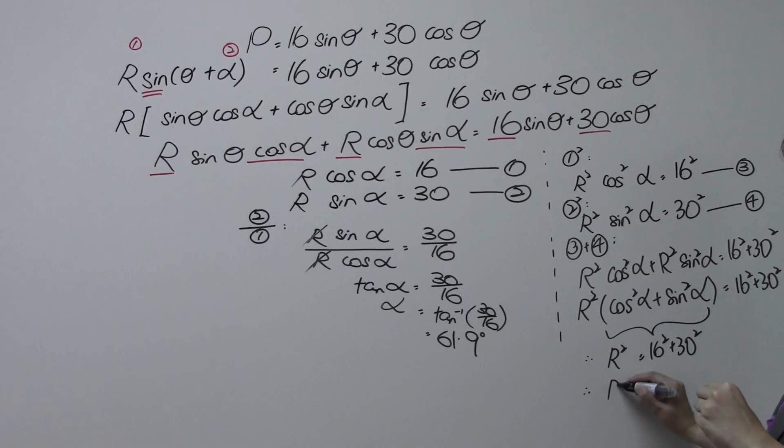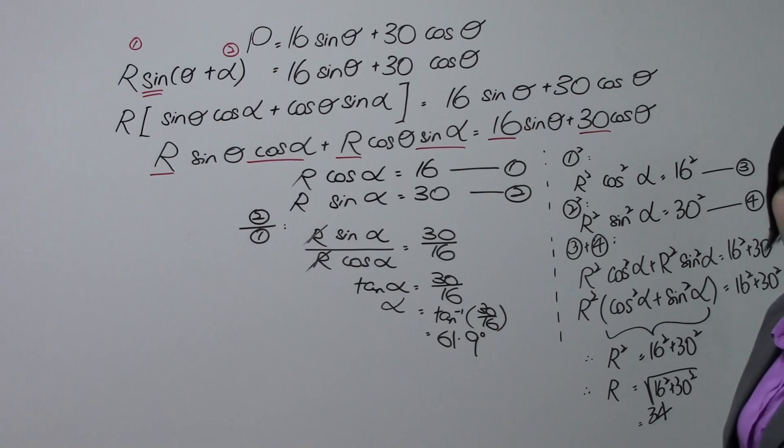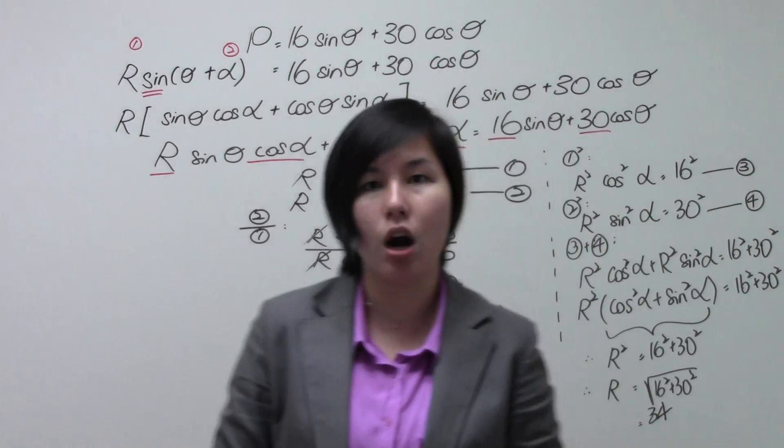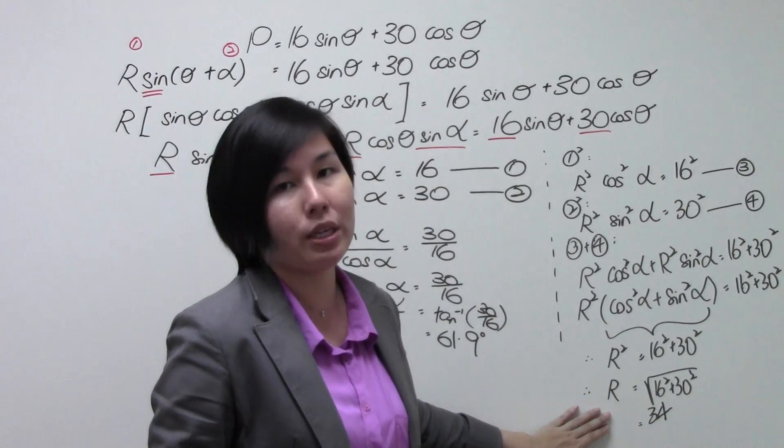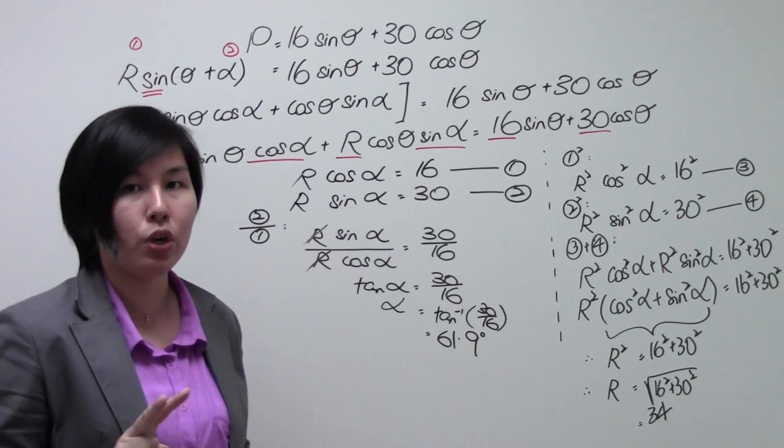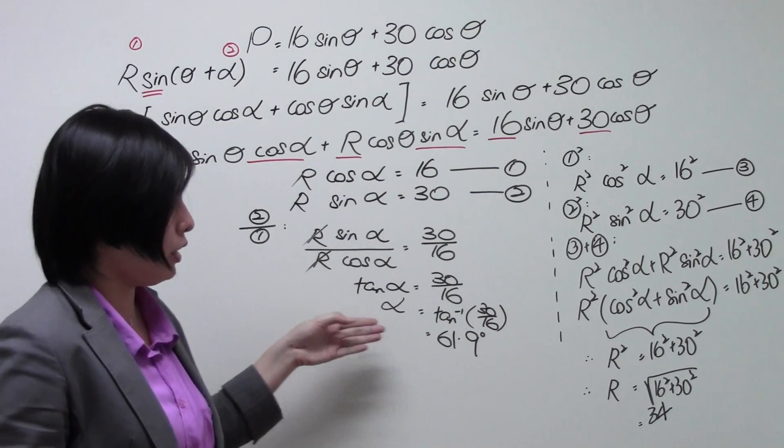Therefore, to find R, we take square root, which will give us the value of 34. All right now, on this part here, whenever we take square root, there are two answers plus minus, but there's a condition for R. R is definitely going to be more than zero. So this is how we found out the two unknown in your R formula, your alpha and your R.